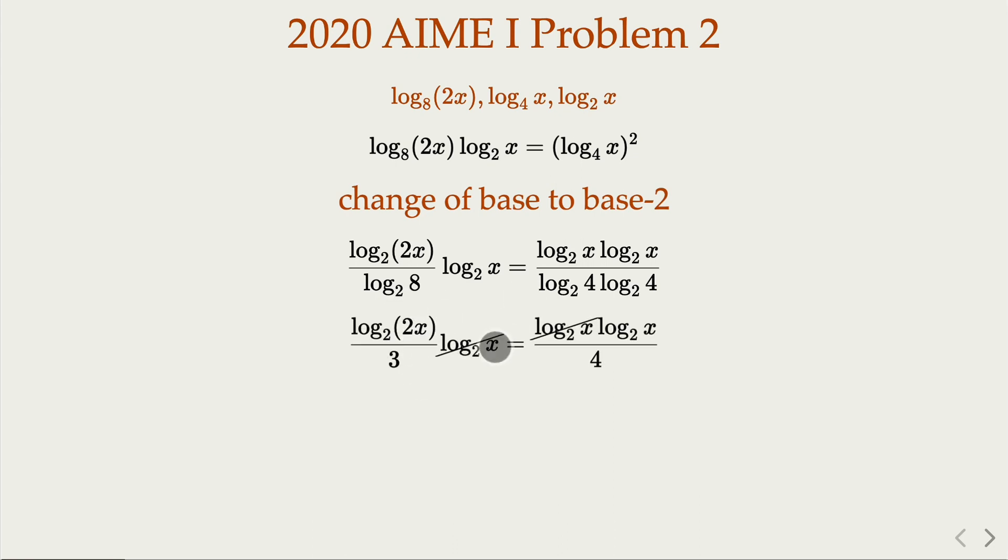Okay, and we cancel log 2x on both sides. So here product becomes addition and log 2 of 2 is 1. So we have this. Recap. So this is what we have.